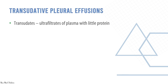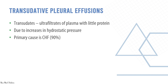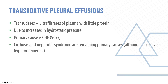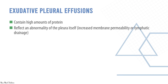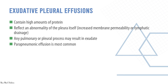Transudates are ultrafiltrates of plasma with little protein, indicating increased hydrostatic pressure. The main cause is heart failure in about 90% of patients; cirrhosis and nephrotic syndrome are the remaining primary causes, often associated with hypoproteinemia. Exudates contain high amounts of protein and reflect abnormality of the pleura itself. Any pulmonary or pleural process may result in an exudate. Parapneumonic effusion is the most common cause of exudative pleural effusion, and massive effusions are generally due to malignancy.